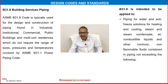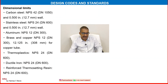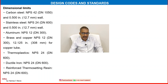This code is intended to be applied to piping for water and anti-freeze solution for heating and cooling, steam and steam condensate, air, combustible liquids and other non-toxic, non-flammable fluids contained in piping not exceeding the following. It is mainly used in building services. Materials include carbon steel, stainless steel, aluminium, brass and copper, thermoplastic, ductile iron, and reinforced thermosetting resins.